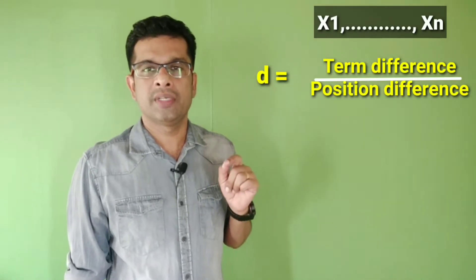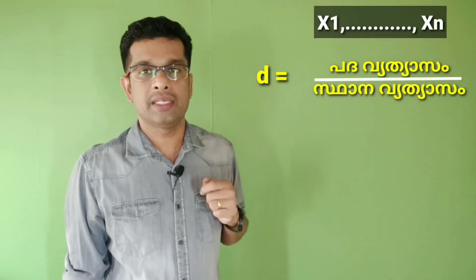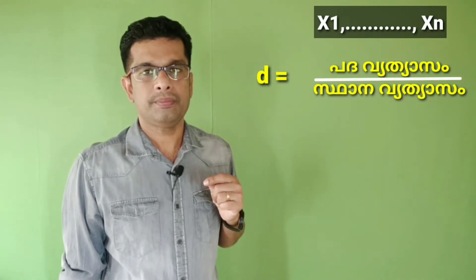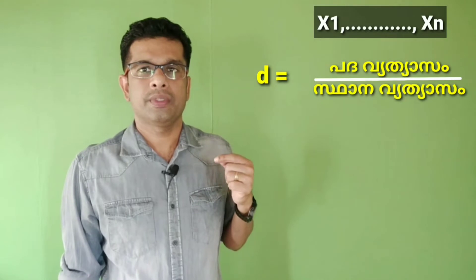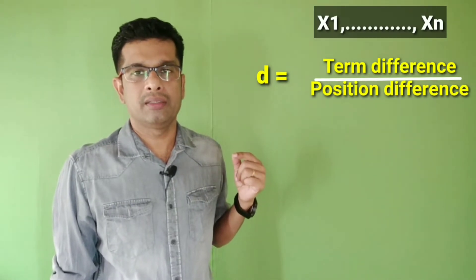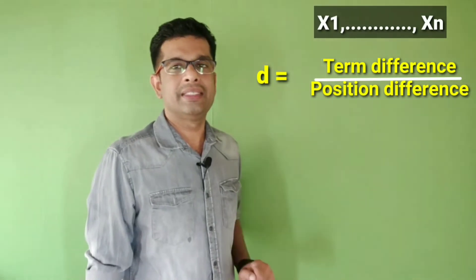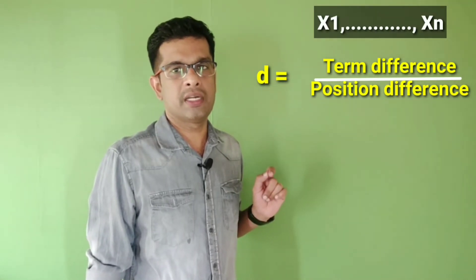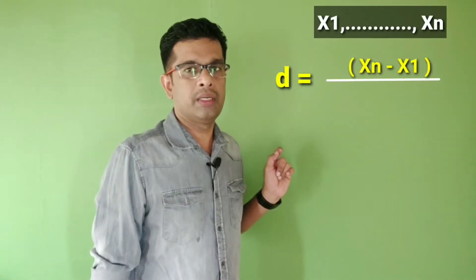There is another important concept: common difference. Now we need to know the first term and last term. The number of terms is n. D is equal to term difference divided by position difference: d equals xn minus x1, divided by n minus 1.